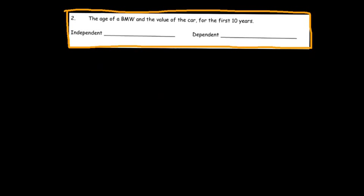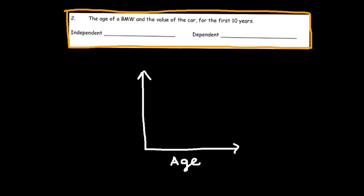The age of a BMW and the value of the car for the first 10 years: when I buy a car initially, it's probably fairly expensive — especially a BMW. After a few years, and especially after 10 years, the price isn't going to be as valuable as when I first bought it. So the value of the car is dependent on the age. This is one where time is involved — we see age as a factor of time. Therefore, the independent variable is the age of the car, even though I can't actually control it, it is what's determining the outcome. The dependent variable is the price of the car.